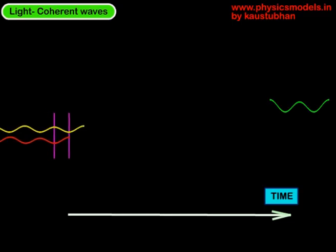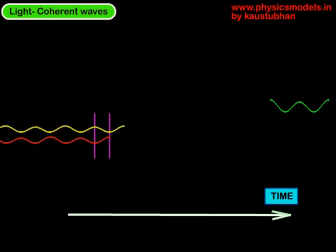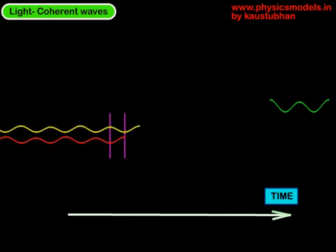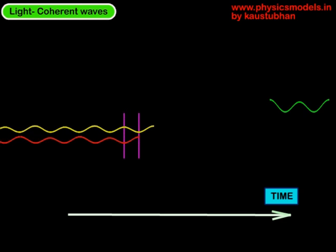So the trough of one is coinciding with the peak of the other, and you can see that the phase difference is constant with time. So such waves are called coherent waves.